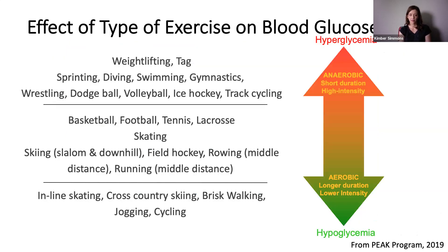This is a generalized summary depending on how hard you're working and exactly what you're doing within each activity. The activities on top are anaerobic — you're working so hard you're not able to use oxygen to break down glucose. As a result, you're making lactate, which turns into glucose. On the bottom are more endurance activities like running — longer duration, possibly lower intensity, more aerobic — which put you at risk for low blood sugar levels.